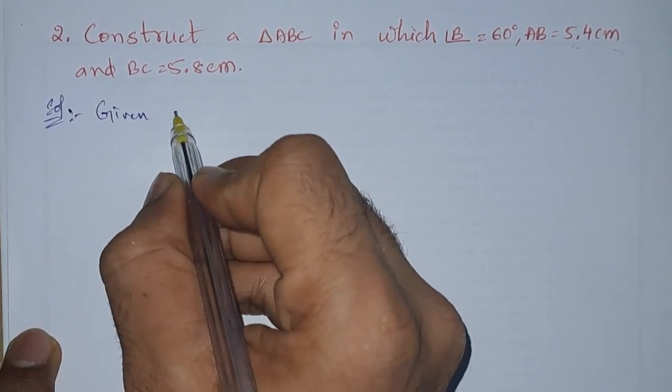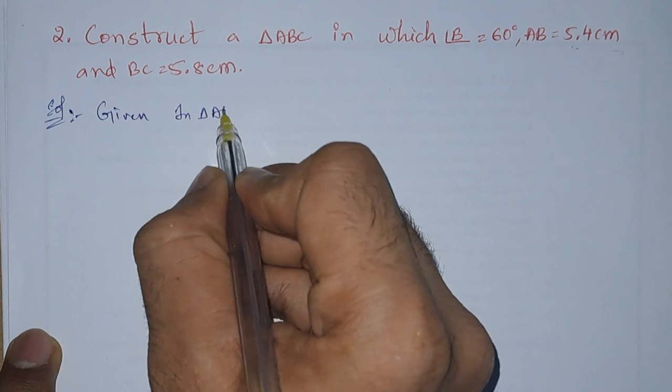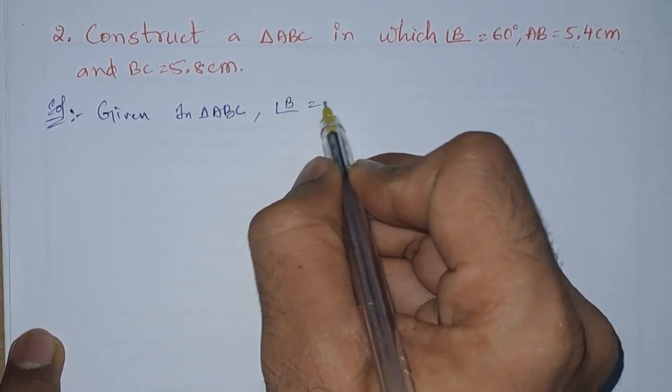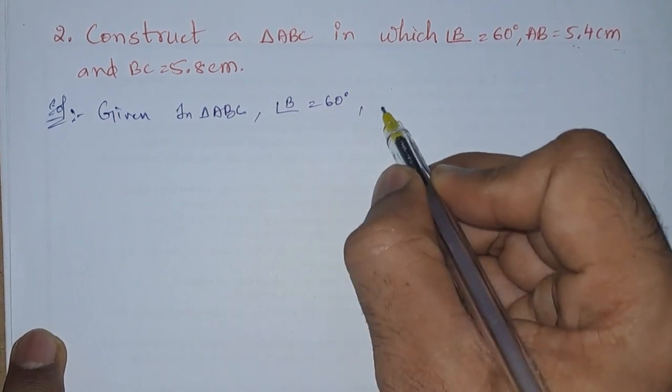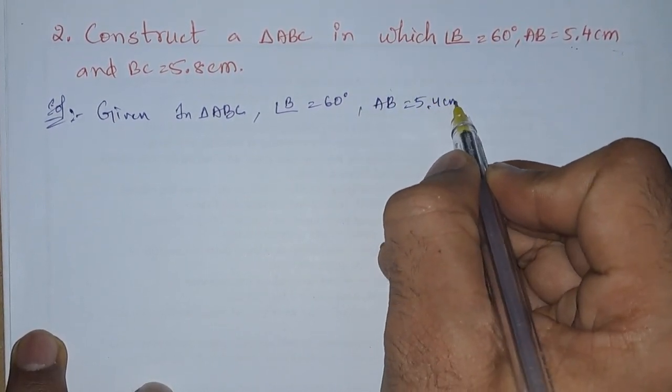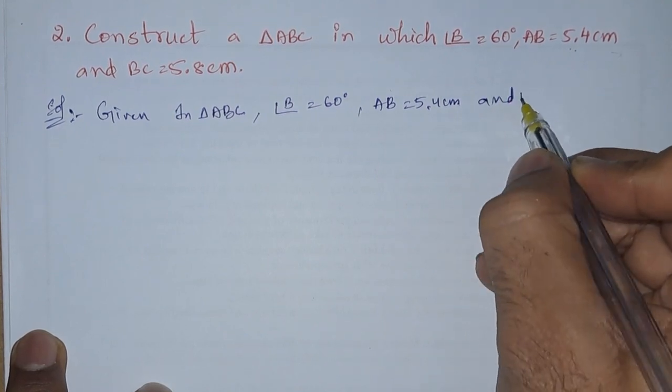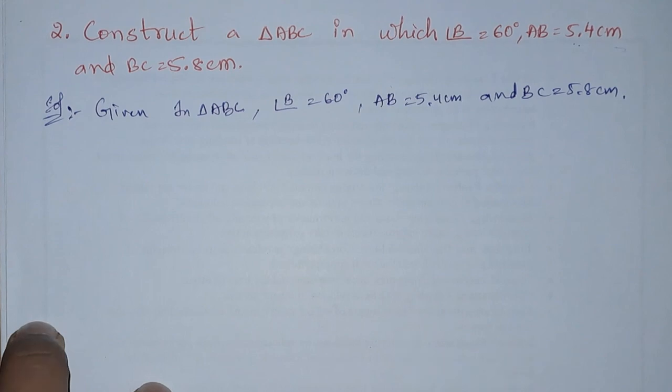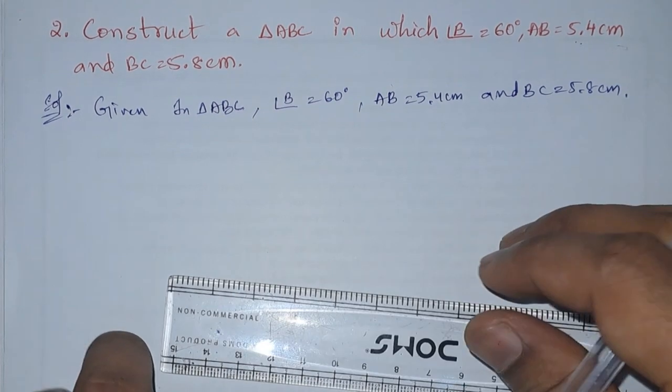Given: In triangle ABC, they have given angle B equals 60 degrees, AB equals 5.4 centimeters, and BC equals 5.8 centimeters. Now we will take the longest side as a base and we will draw a line.